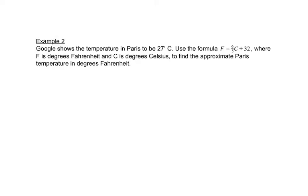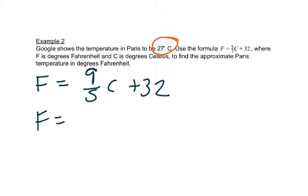Google shows the temperature in Paris to be 27 degrees Celsius. Use the formula F equals 9 fifths C plus 32 where F is in degrees Fahrenheit and C is degrees Celsius to find the approximate Paris temperature in degrees Fahrenheit. So let's start by writing down this formula. F is equal to 9 fifths C plus 32. Now we know what we want the C to be. The C is 27. So we'll put that in place of C.